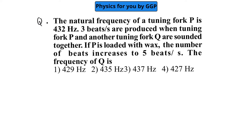The natural frequency of tuning fork P is 432 Hz. Three beats are produced when tuning fork P and another tuning fork Q are sounded together. If P is loaded with wax, the number of beats increases to 5 beats per second. We need to find the frequency of Q.